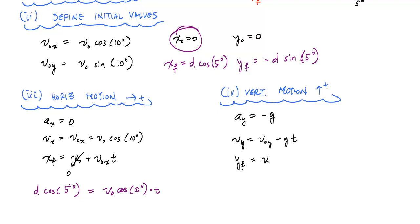And if I substitute into this last equation here, I will get that yf is minus d sine of 5 degrees is equal to y0, which is 0, so that's easy. That was 0, plus v0y, which is v0 sine of 10 degrees times t minus 1 half g t squared. And what I'm left with here is two equations and two unknowns.